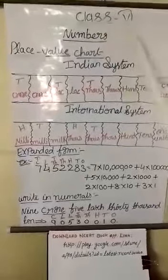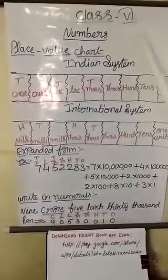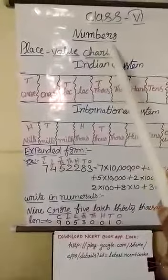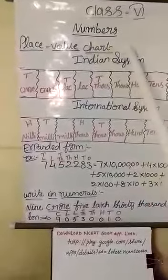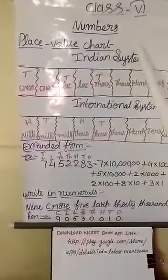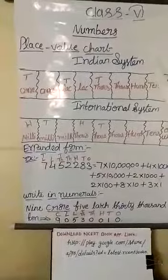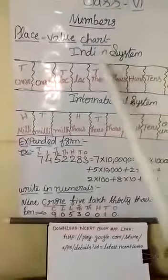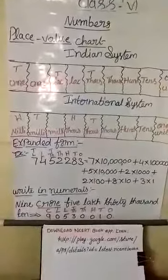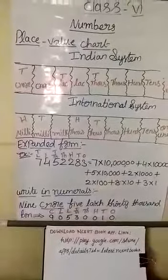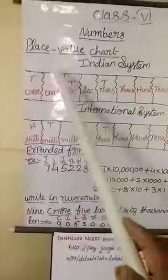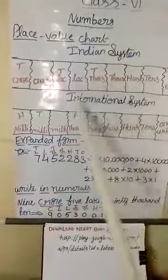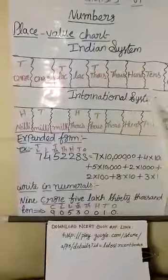Hello students, for class 6th, the topic is numbers. In the previous class, you already learned about natural numbers, whole numbers, their place value, and which is the greatest and smallest number. In this chapter, we learn about the place value chart of the Indian system and the International system.